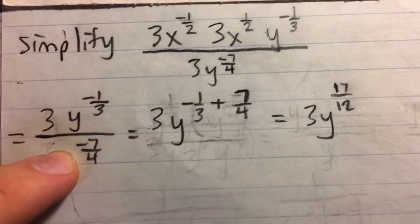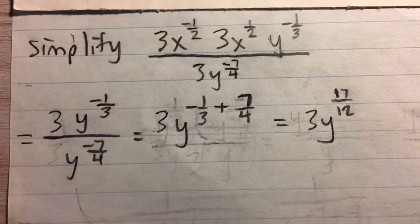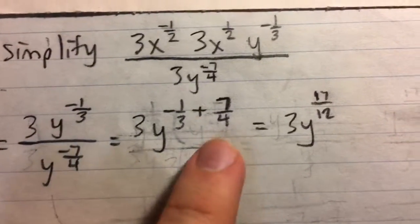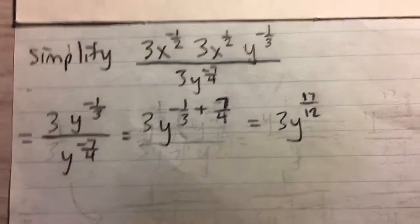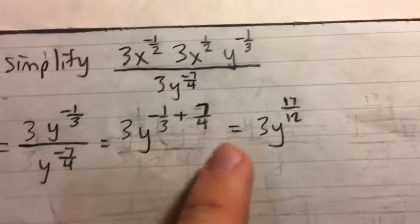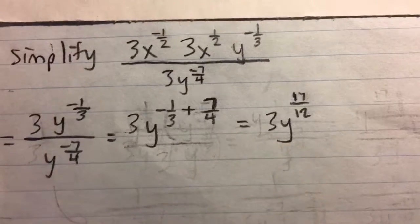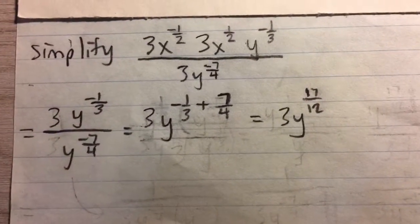So negative 1 third minus negative 7 over 4, that's a negative and a negative, so it makes a positive. So we have 3y to the negative 1 third plus 7 over 4, and if you add those two fractions, you'll get 3y to the 17 over 12.